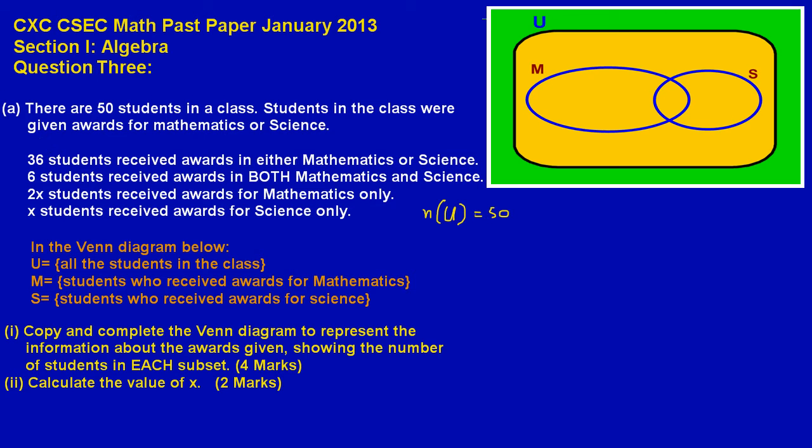Now the second paragraph my friends is simply saying there are 36 students who received awards in either mathematics or science. Basically what this is saying is that the combination of students, when they add it up to some total in both math and science, it was a total of 36 students who received awards. So here my friends you could make another set notation. You could say the number of students, n of students in M union S, which is science, must be equal to 36.